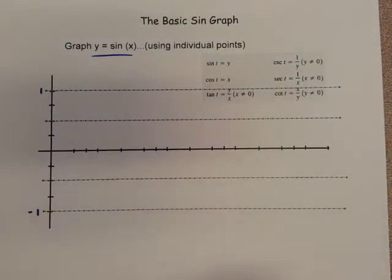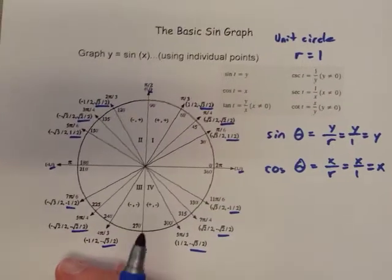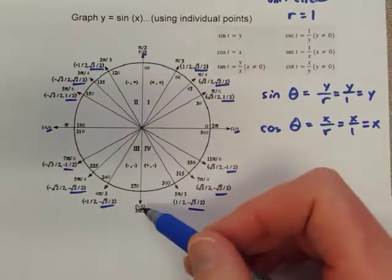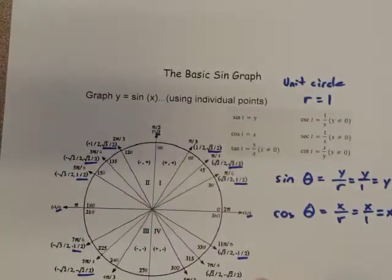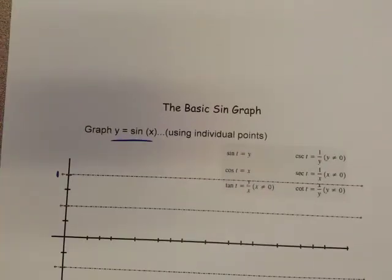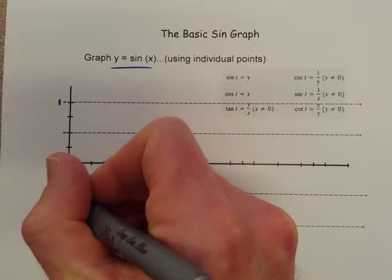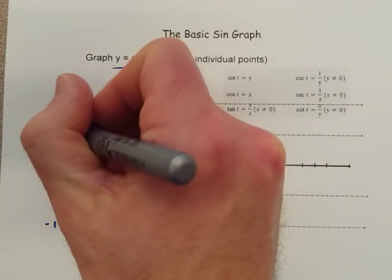those are the highest and lowest values respectively for the y values. If we go back here, you'll notice that the highest y value is one, the smallest y value is negative one. So we're going in between those. All right. So we've got one and negative one. That means that this is negative 0.5 and this is 0.5.